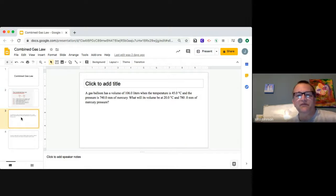Here's our problem. We have a gas balloon with the volume of 106.0 liters. The temperature is 45 degrees Celsius and the pressure is 740 millimeters of mercury. What will its volume be at 20 degrees Celsius and 780 millimeters of mercury of pressure?